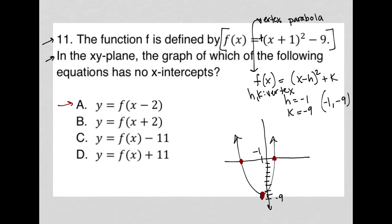What is choice A saying? Choice A is saying that I would shift the vertex to the right two units. That's what this minus 2 inside of here does. It actually shifts the vertex to the right two units. By shifting this to the right over here, I would still have x-intercepts because it still faces up. So that's no good.